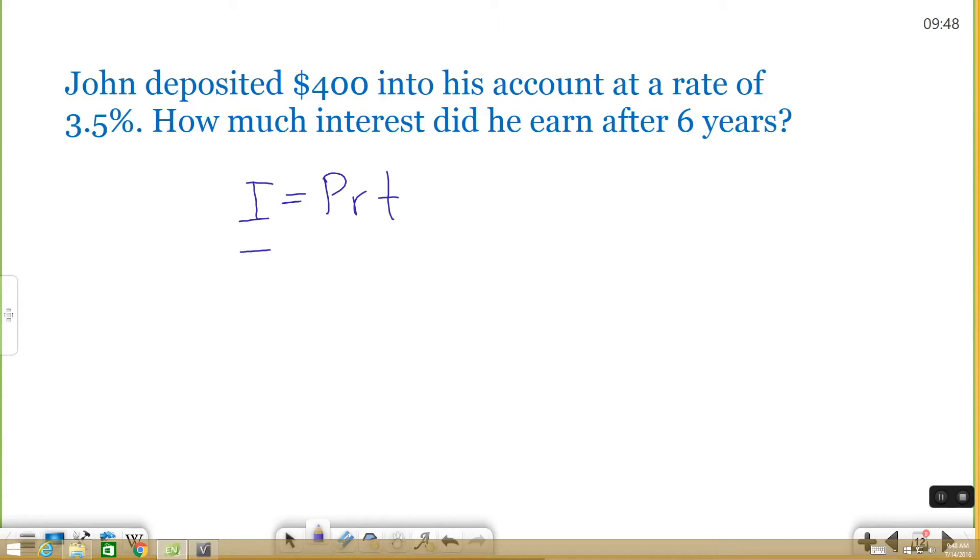So I'm going to fill in this information into my formula. I'm going to multiply it out and see what I get. So I equals $400 is what I put into the account. It's the principal. The rate is 0.035. Rate will always be given to you as a percentage, but you need to turn it into a decimal. And remember, to turn a percent to a decimal, you just move the decimal point to the left twice. So instead of 3.5, we have 0.035.